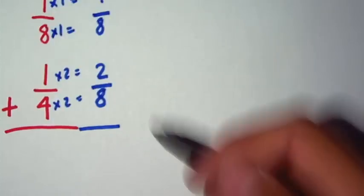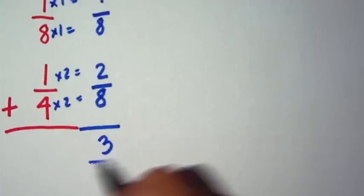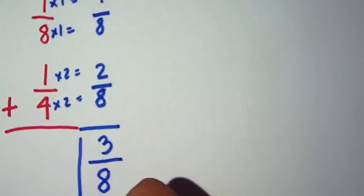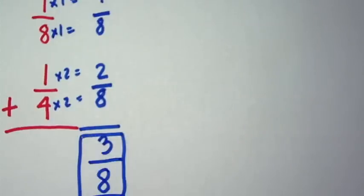So I add my numerators, 1 plus 2 equals 3. My denominator stays the same, 8. And my final answer is 3 over 8. In this case I did not have to simplify.